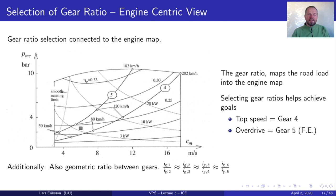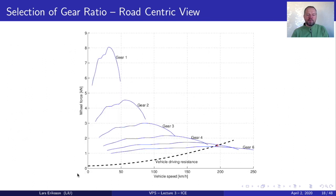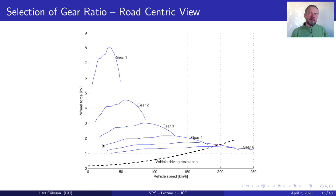That was an engine-centric view. Another way to look at it is a road-centric view, where we plot vehicle velocity as a function of wheel force. In this plot we have the engine maximum torque limit inserted, and the gear ratio influences how much torque we get and the speed range available. We see gear 1 through gear 6. The maximum velocity is attained in gear 5, and gear 6 is an overdrive. We also see the lower speed limit for each gear. Since gear ratios are design variables, we can use them in vehicle design to improve fuel economy.